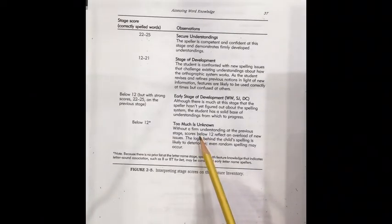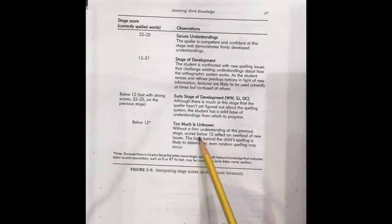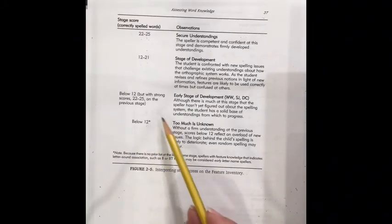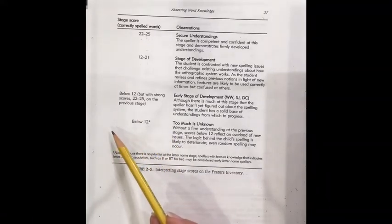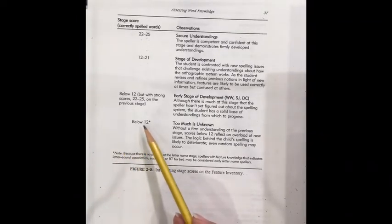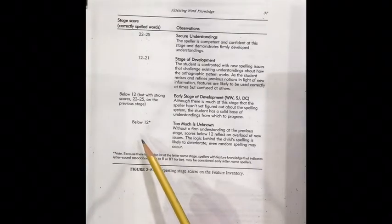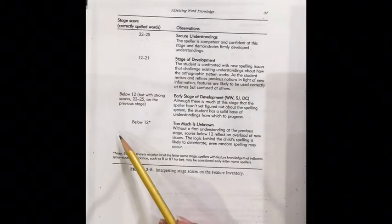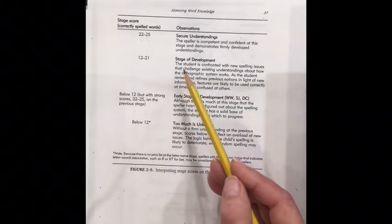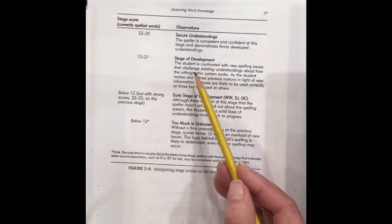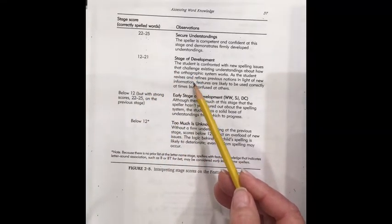And if you started, let's say on the within word test feature test, and you got a score below 12, that would tell you to go down to the lower level test. So within word comes after letter name. So if you had a child score low on the within word test, Gansk is telling you, go back down a level and see what they can do on that lower level. Our student, Jake, scored in this area here. And so it means that this is probably the stage that they're working on.